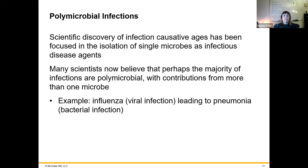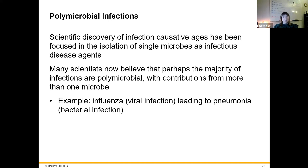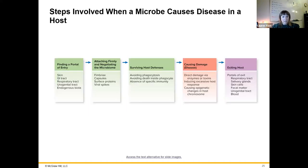Polymicrobial infections mean that more than one organism is associated in that infection, or your immune system is weakened due to the first infection and a second microbe can get involved. Influenza is a viral infection, and when you get influenza, bacteria can be introduced that cause pneumonia — so you have a virus and bacteria going on simultaneously.